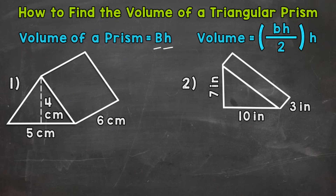Now since we're working with triangular prisms, we're going to have triangular bases. So to find the area of those triangular bases, we use the formula base times height divided by 2 — the formula for the area of a triangle. This is a more specific formula for triangular prisms, because we're using the formula for the area of the triangular bases.